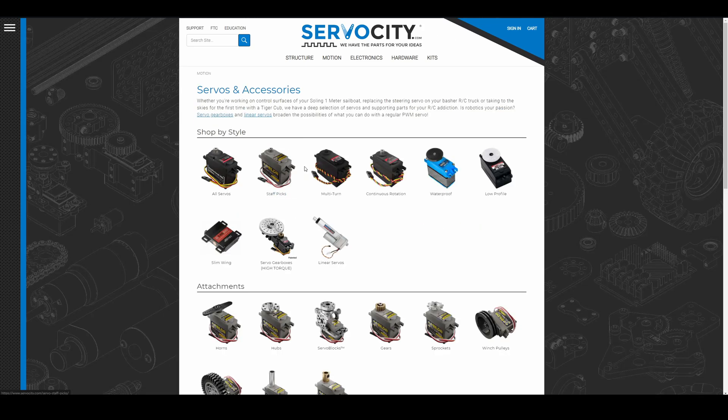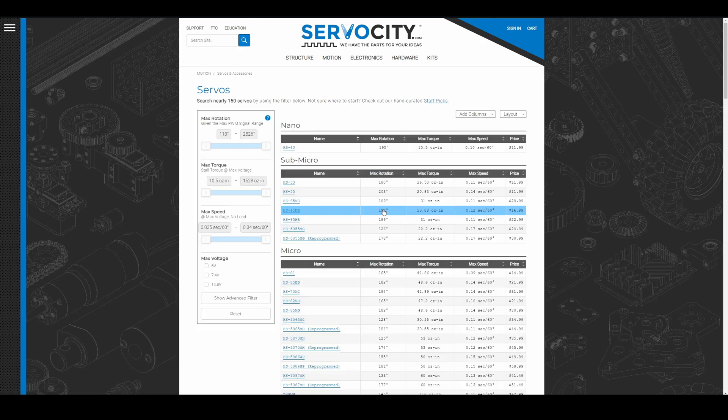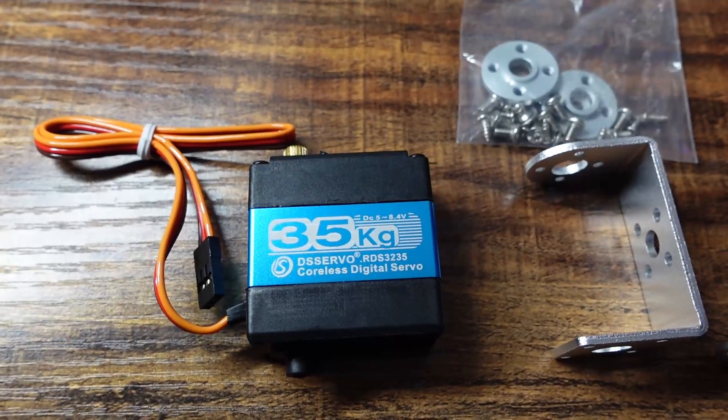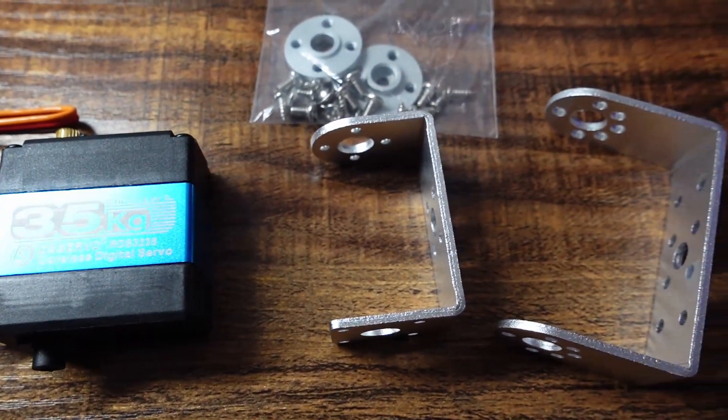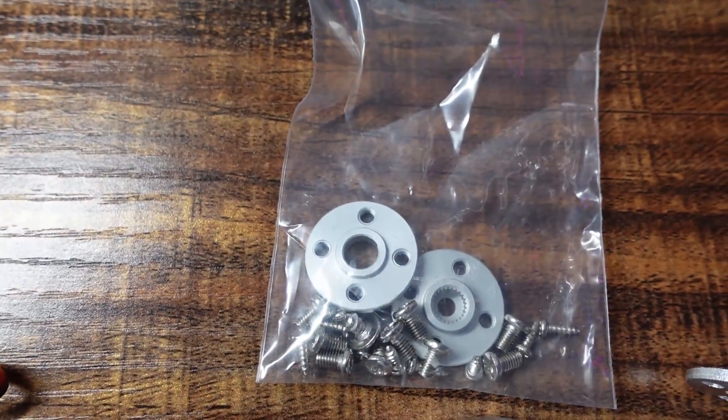I already wanted to use a servo because it has the advantage of built in positional control circuitry and a stupid high gear ratio. The equivalent of probably more than 200 to 1 in an already lightweight package. This 35 kilogram centimeter servo which I've settled on, for instance, is under 70 grams by itself, which is about 2.5 ounces.